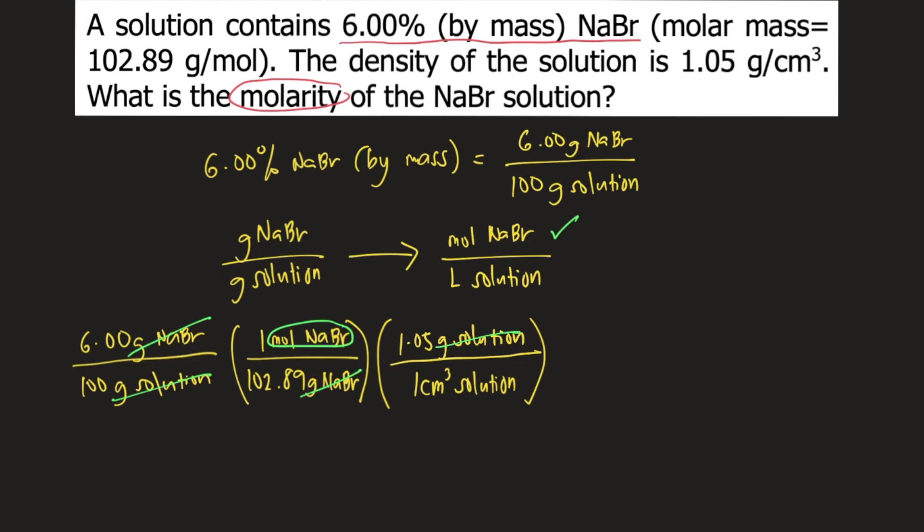And what do we know about cubic centimeter? We know that cubic centimeter is also equivalent to mL. So 1 cm³ is also equal to 1 mL. We can convert the unit: 1 cm³ is equivalent to 1 mL. So cm³ solution would cancel.